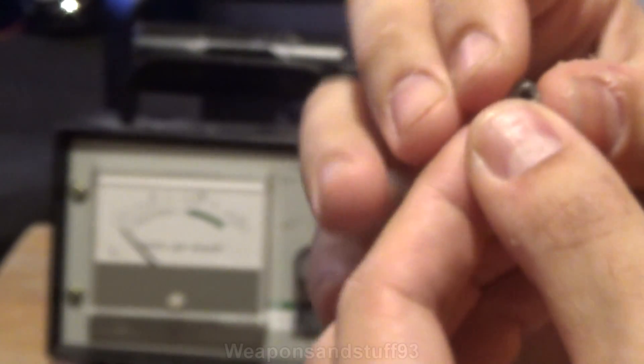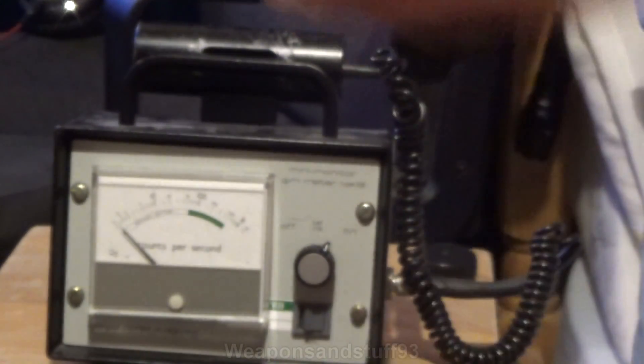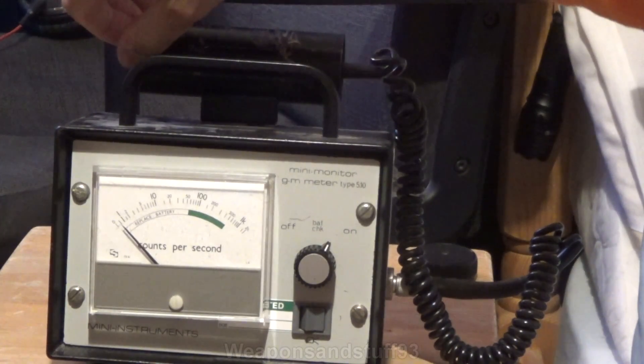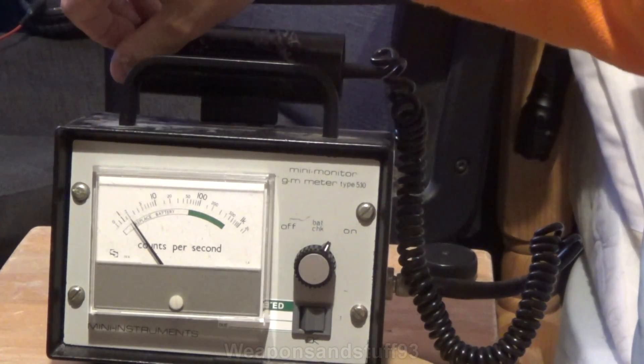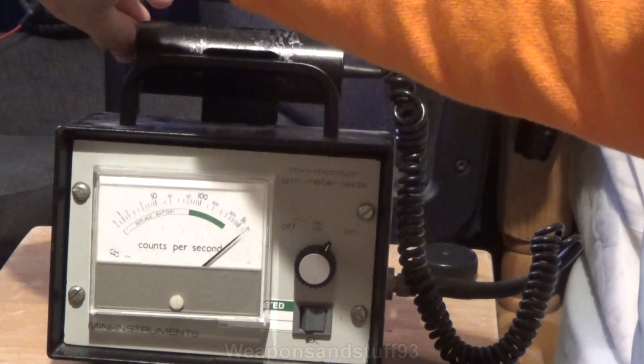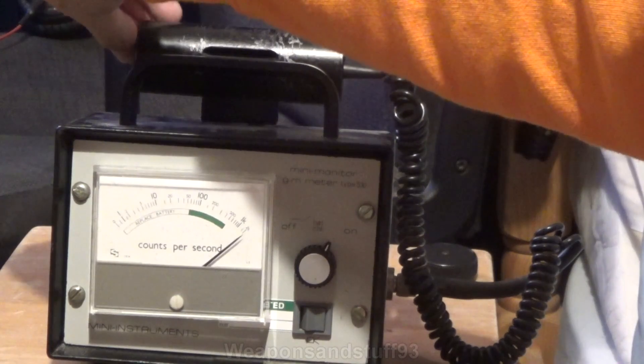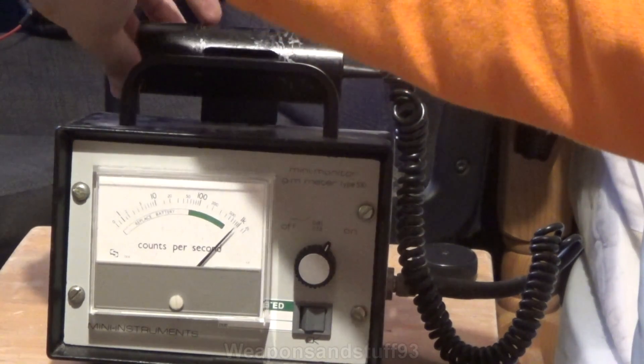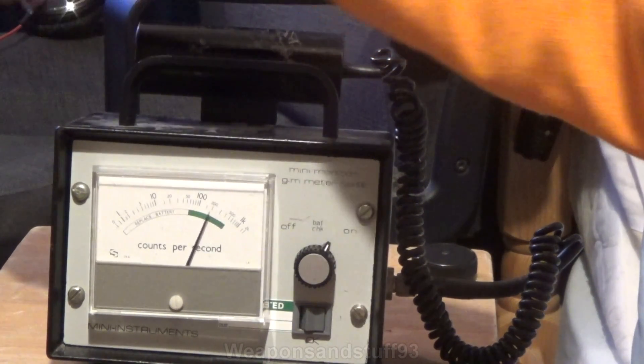So what I'm going to do is if I put the backside next to the Geiger counter, you'll see you'll get a little bit of a reading from the gamma coming off of it. But not very much. Now if I flip it over, there you go, very high reading. So, there you go.